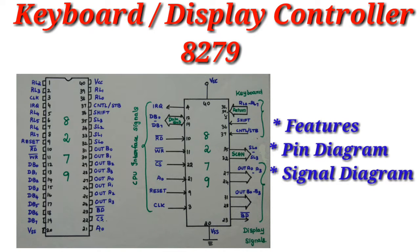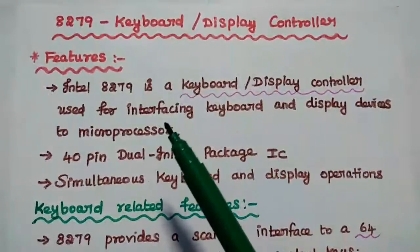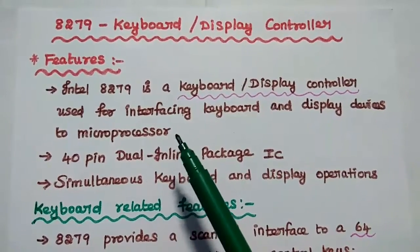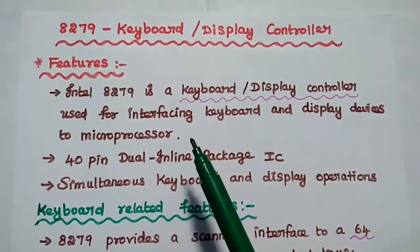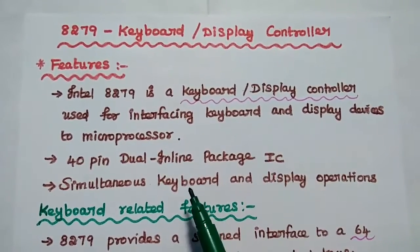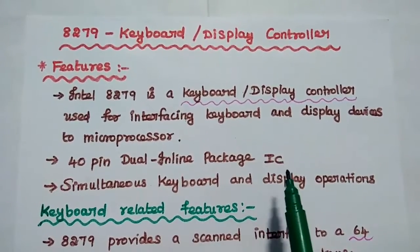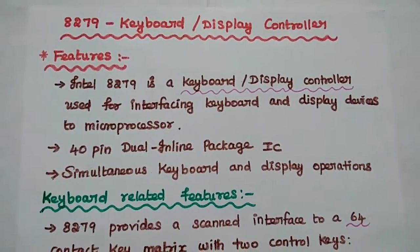Dear students, now we are going to discuss the pin diagram of 8279 keyboard display controller. Let's start with the features of 8279. Intel 8279 is a keyboard display controller used for interfacing keyboard and display devices to the microprocessor. It is a 40-pin dual inline package IC that can allow simultaneous keyboard and display operations.